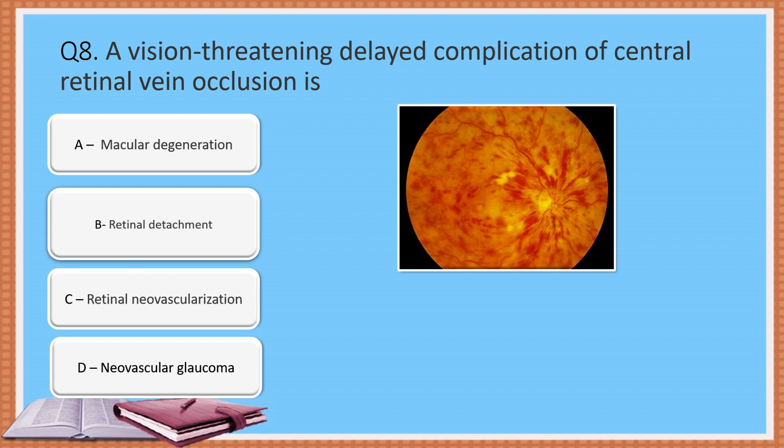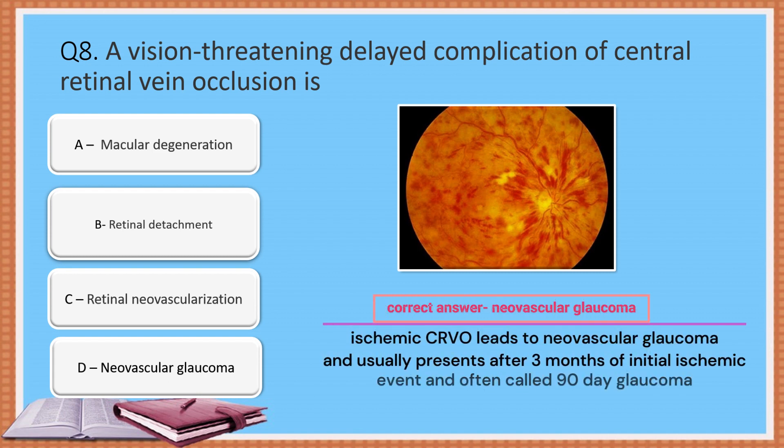Option D: Neovascular glaucoma. The correct answer is Option D: Neovascular glaucoma. Ischemic CRVO leads to neovascular glaucoma and usually presents after 3 months of the initial ischemic event, and is often called 90-day glaucoma.